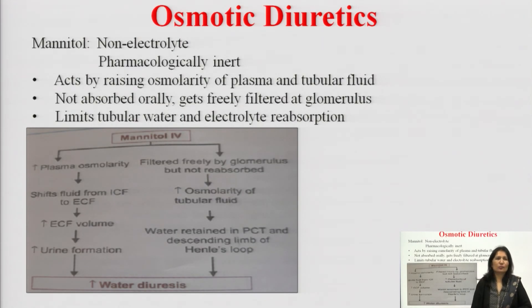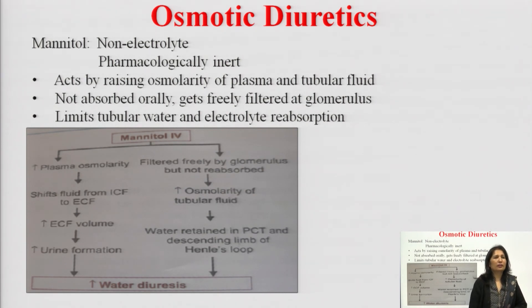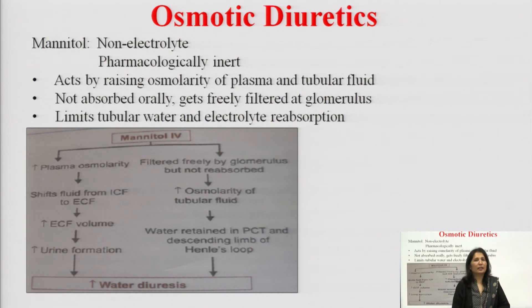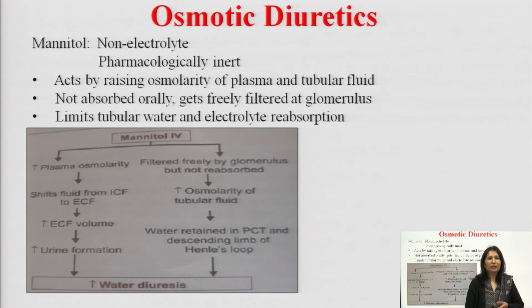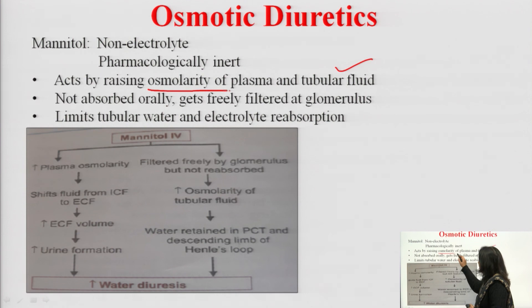The last class is osmotic diuretics — mannitol. It is a non-electrolyte, pharmacologically inert substance. It acts by raising the osmolarity of plasma and tubular fluid. It is freely filtered at the glomerulus, reaches the renal tubule, and is not absorbed orally, so it must be given intravenously. By reaching the renal tubule, it raises the osmolarity of plasma and tubular fluid.